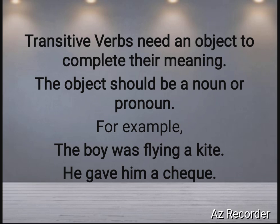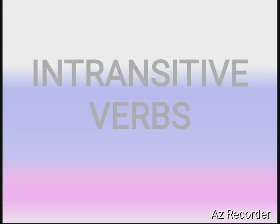How do we know if it is a transitive or intransitive verb? We look at the verb — here the verb is 'flying'. We ask the question: 'Flying what?' The boy was flying — flying what? A kite. We got an answer, so it is a transitive verb. Similarly, 'He gave him a check' — gave what? A check. So 'gave' is our transitive verb. I hope you have understood what transitive verbs are.